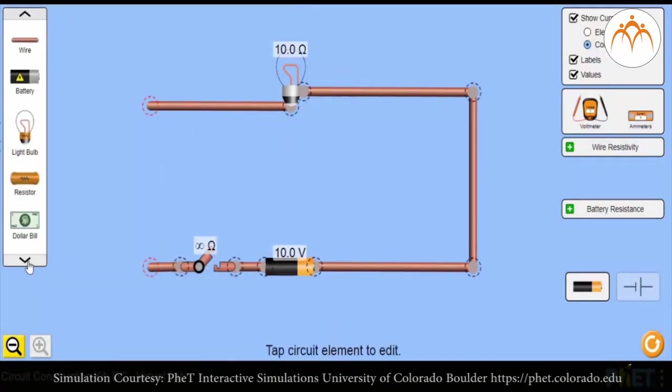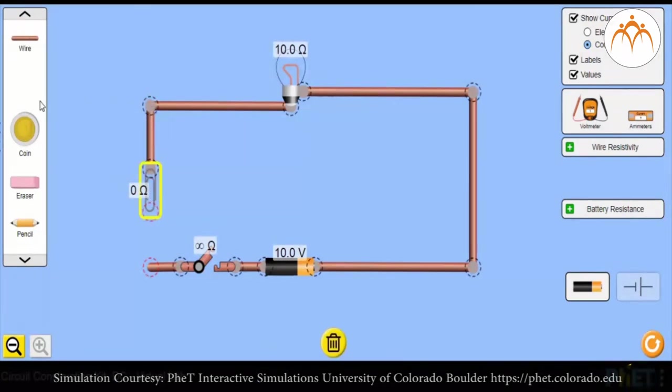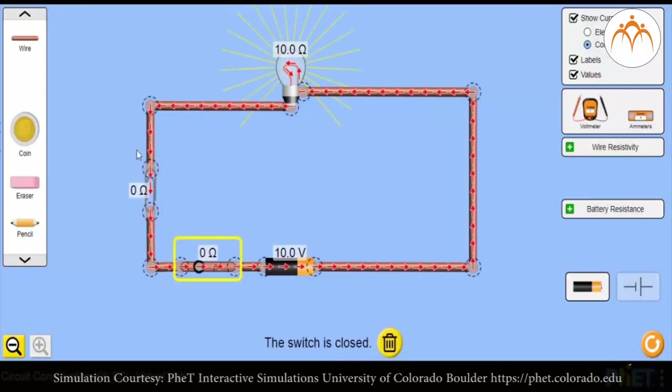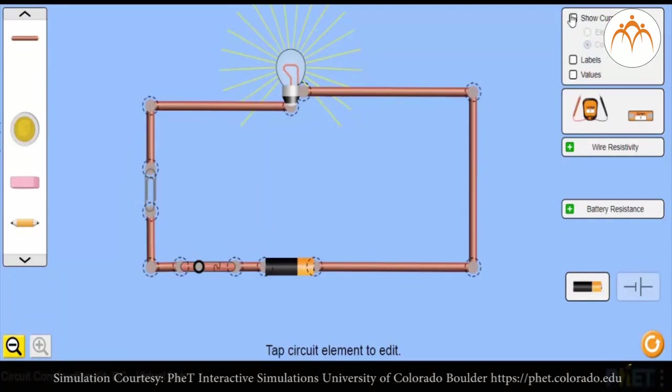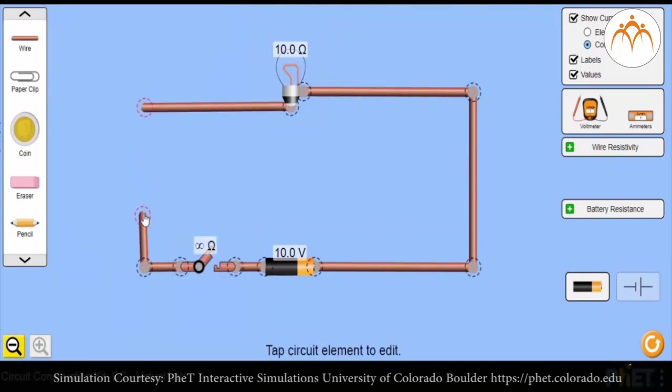Let's add paper clips to the circuit. It is a conductor. Let's add eraser or rubber to the circuit. Flow of electrons stops. Rubber is an insulator.